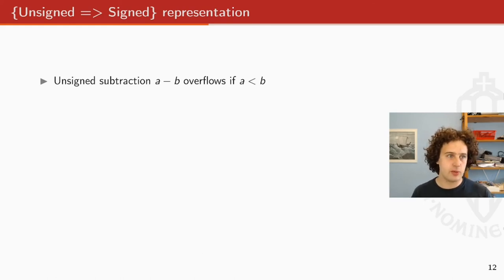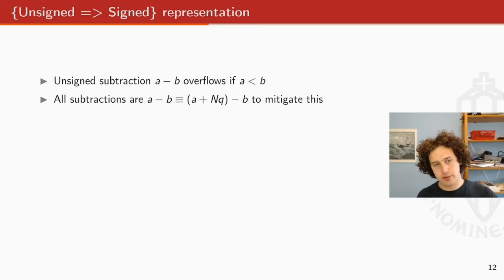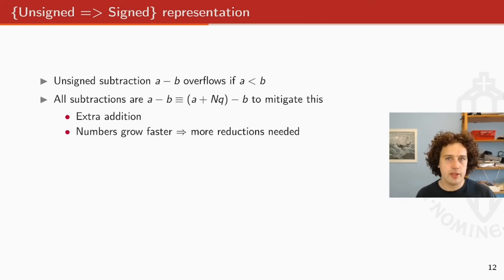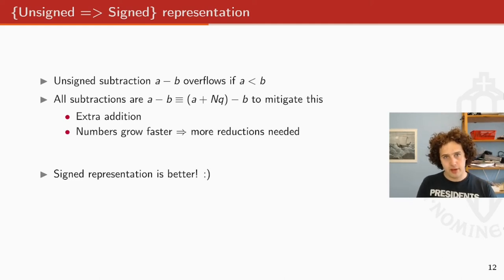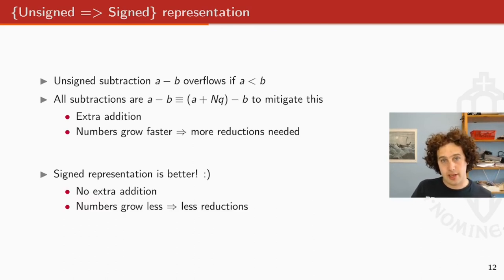So the other performance upgrade that we did is we moved from unsigned to signed representation. Basically easy. Every time if you have an unsigned implementation, you do a subtraction, then it's possible for this subtraction to overflow. So what you do is you mitigate this by adding a multiple of Q every time. When you have to do this, then every time you need to do an extra addition. But furthermore, you also have to do more reductions because you are constantly adding this multiple of Q. That means that your numbers are growing faster and that means that in the end you have to do more reductions. So we found that for the Cortex-M3 and the Cortex-M4, we can easily just implement all the NTTs and all the math in signed representation. And so we move to signed representation. So there's no extra additions and there's less reductions in the end.